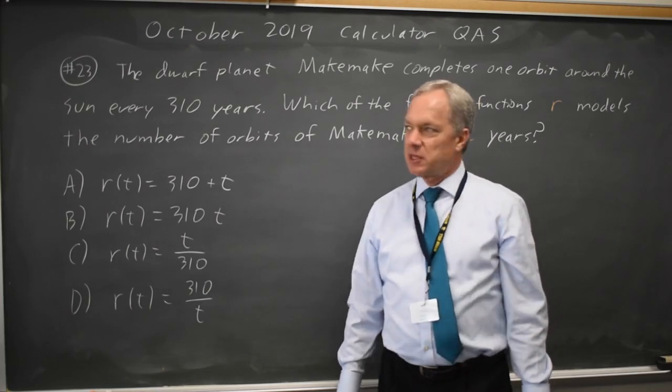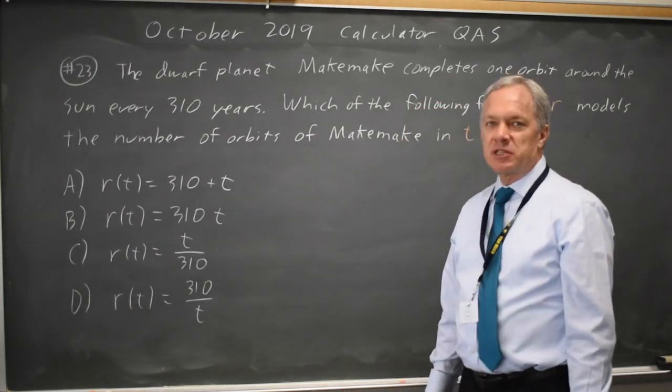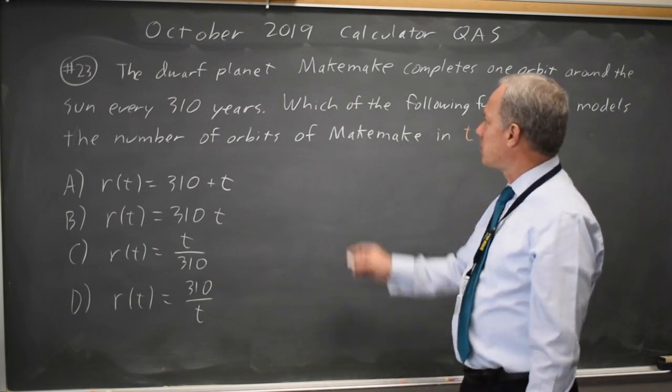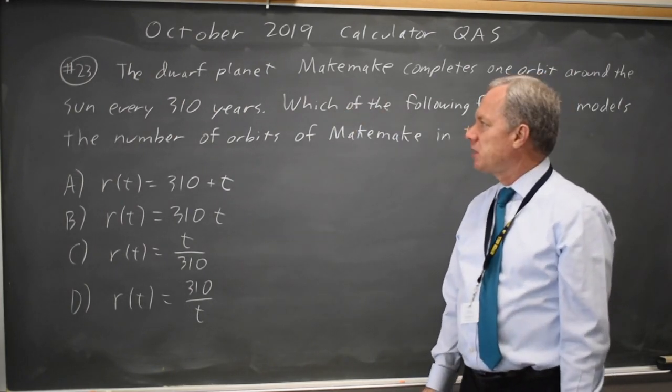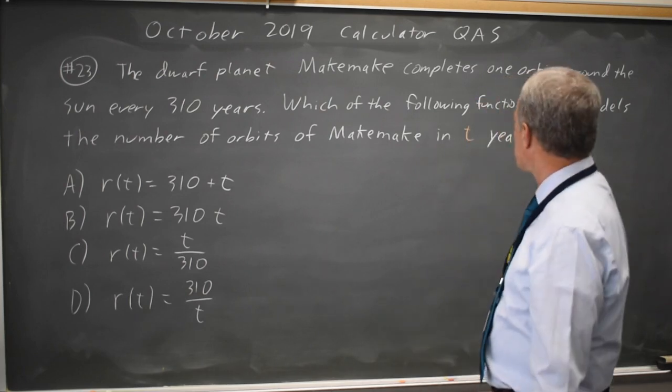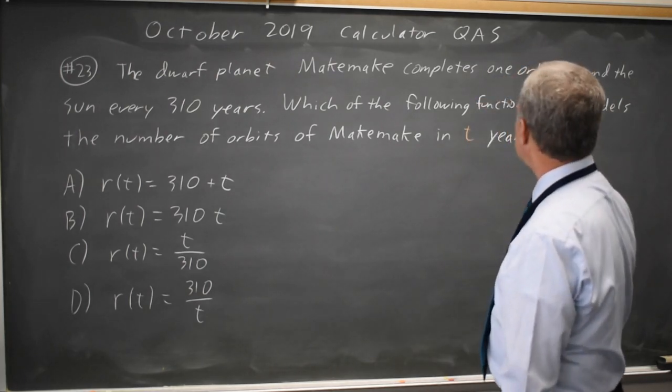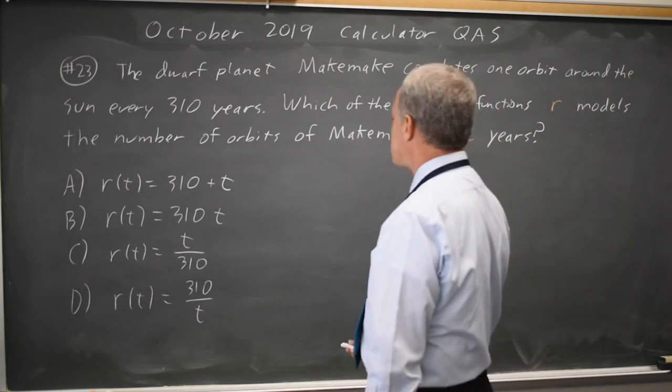This is question 23 from the calculator section. College Board is asking about the dwarf planet Makemaker, which completes one orbit in 310 years, so it's probably out with the Kuiper Belt. They're asking which function models the number of orbits in T years.